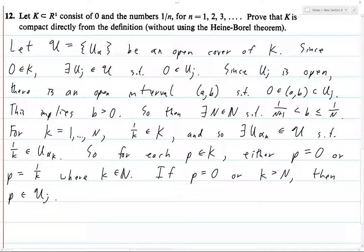And if neither of these two scenarios are true, then P equals 1 over K, where K is less than or equal to N.